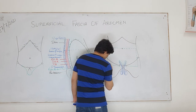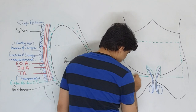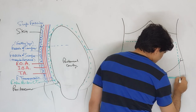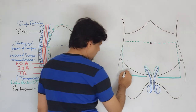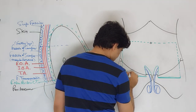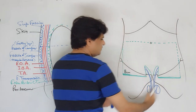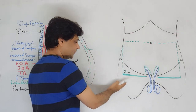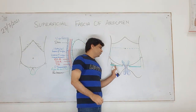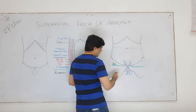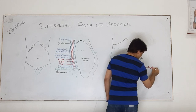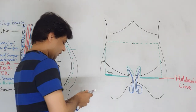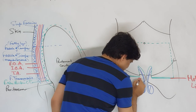This fascia of Scarpa blends and fuses with fascia lata of the thigh from the pubic tubercle around eight centimeters laterally on both sides. From the pubic tubercle it extends eight centimeters laterally and fuses with the underlying deep fascia of the thigh - fascia lata. This fusion of fascia Scarpa is called Holden's line.